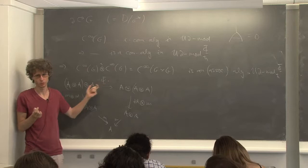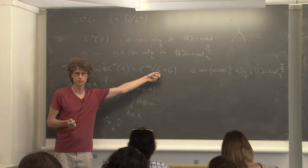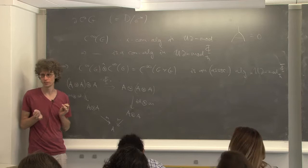So we have some strange product on functions on G times G which is associative in this sense, not in the ordinary sense. But we want to get a true ordinary associative product — and not on G times G but on G. So what do we do? We just mod out by G.